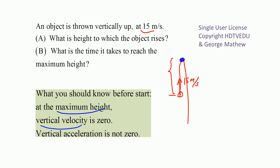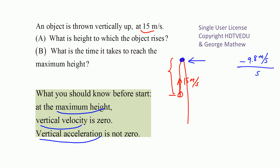Even at the maximum height, there is still the pull of the Earth. So vertical acceleration — acceleration due to gravity — is not zero at the maximum height. Instantaneously the velocity is zero, but the acceleration is not. Because acceleration is not zero, there is a constant change of vertical velocity by negative 9.8 meters per second per second.